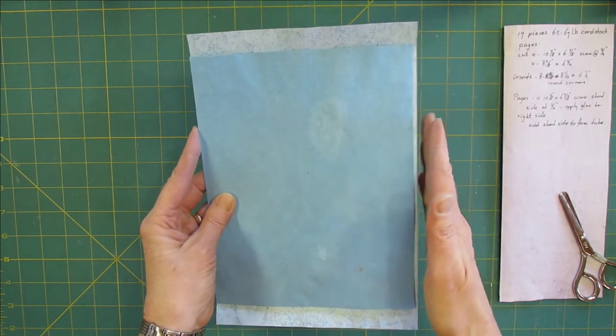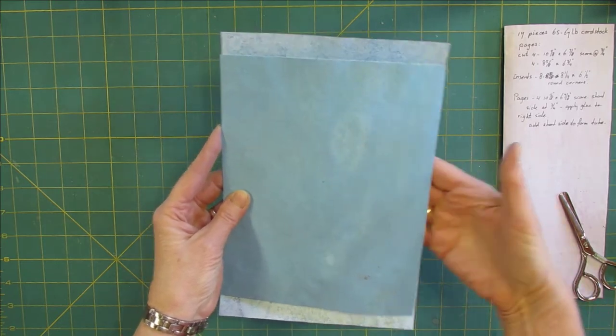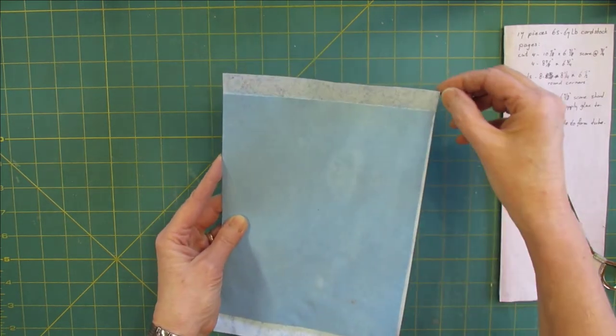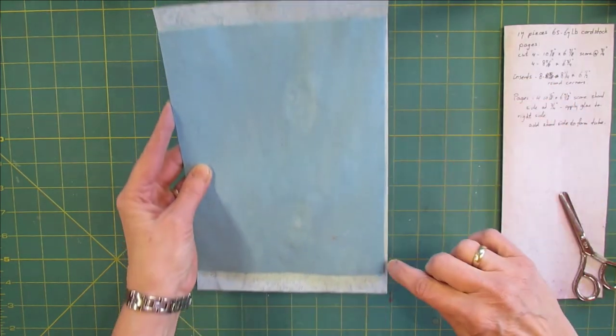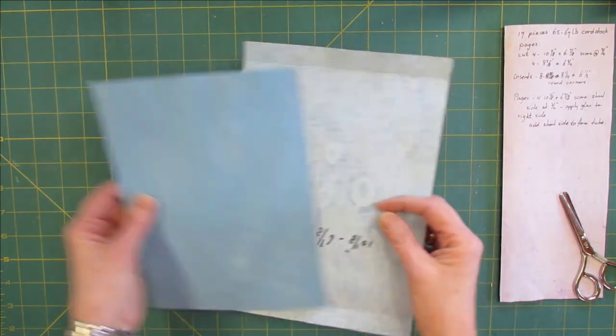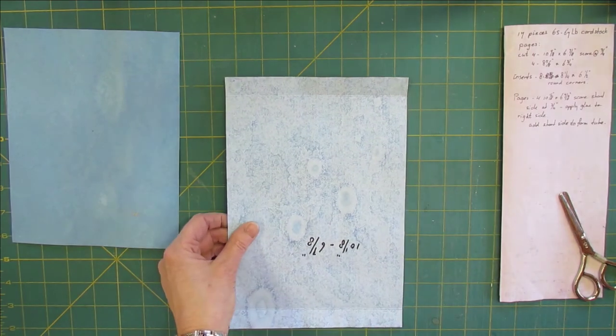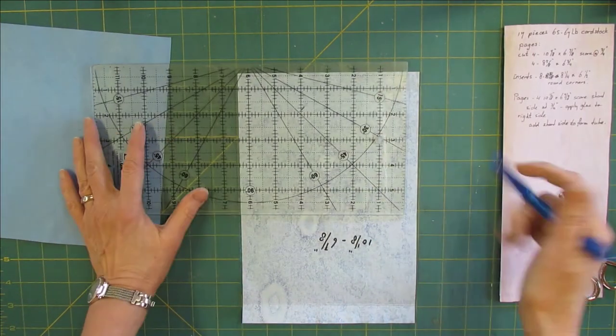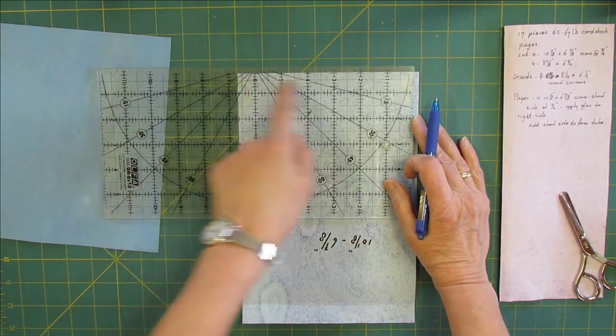That's because the inserts are going to go in here and it makes it easier for access. Now we want to trim off that little piece over here on both sides. I'm going to draw this on the paper so that you can see.